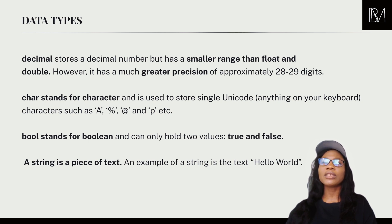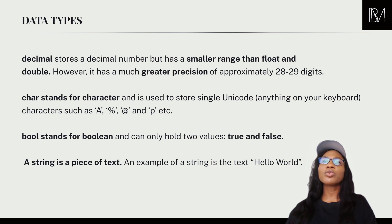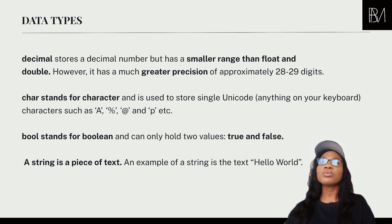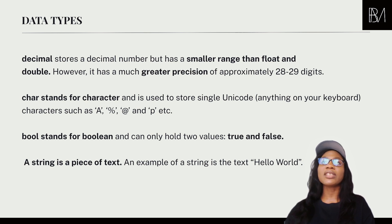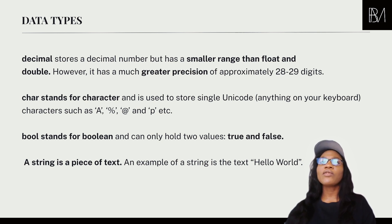There's also the decimal. The decimal is similar to float and double in that it holds decimal numbers, but it has a much smaller range and is much more precise. It's better for financial applications — things used in banking — where extreme precision is required. For example, an application converting currency rates needs something extremely precise. So: double is larger, float is smaller, but decimal is even smaller than float and more precise.